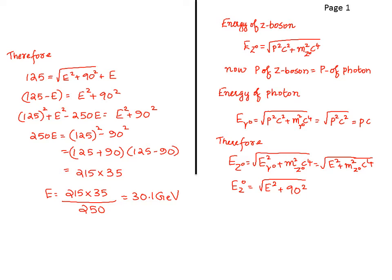So therefore, energy of Z boson becomes √(E_γ² + m₀²c⁴). Hence, 125 equal to √(E_γ² + 90²) + E_γ. Solving by squaring the equation, we get energy is equal to 30.1 GeV. So relativistic expression for energy is a very important question in CSIR.